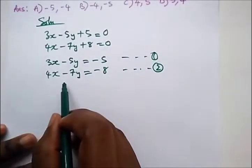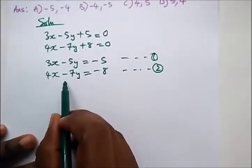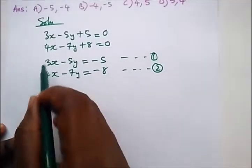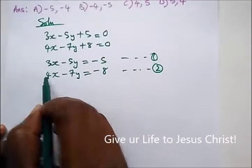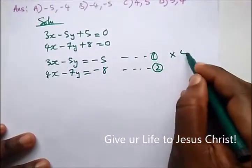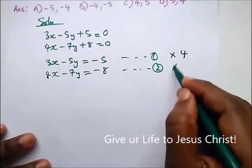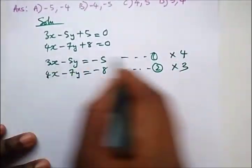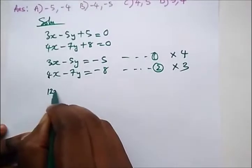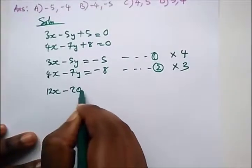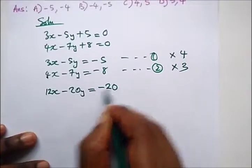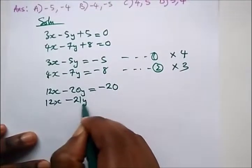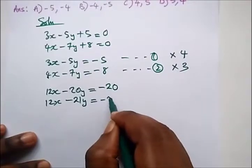We need to have the same coefficient on both equations. Let's cancel x, so we make the coefficients the same. We multiply the first equation by 4 and the second equation by 3. This gives us 12x minus 20y equals minus 20, and 12x minus 21y equals minus 24.